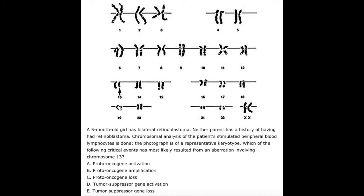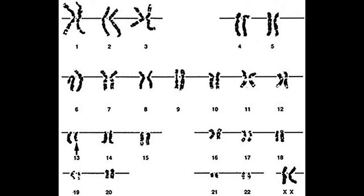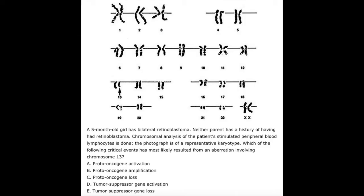A five-month-old girl has bilateral retinoblastoma. Neither parent has a history of having had this cancer. Chromosomal analysis of the patient's stimulated peripheral blood lymphocytes is done. The photograph is of a representative karyotype. Which of the following critical events has most likely resulted from an aberration involving chromosome 13?